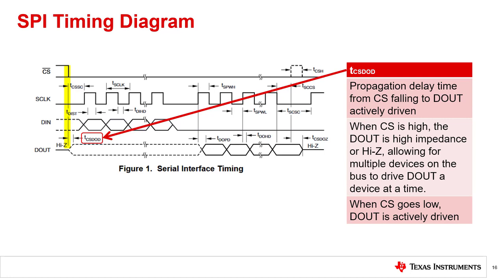TCSDOD is the time from the falling edge of chip select to the enabling of DOUT. When chip select is high, the DOUT of the peripheral device is high impedance, or high-Z, preventing an inactive peripheral device from driving the DOUT line. When chip select is driven low, DOUT is driven by the active peripheral. TCSDOD shows the propagation delay from chip select going low to when DOUT is active.